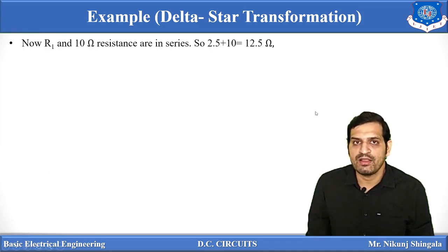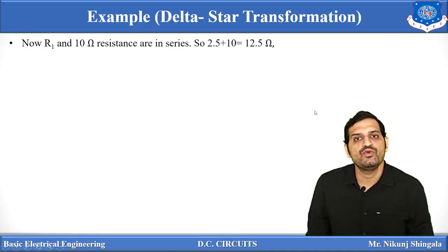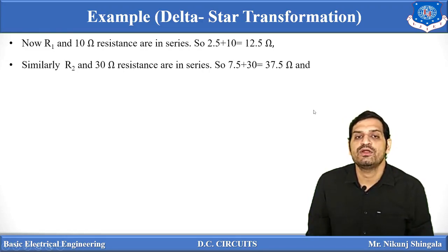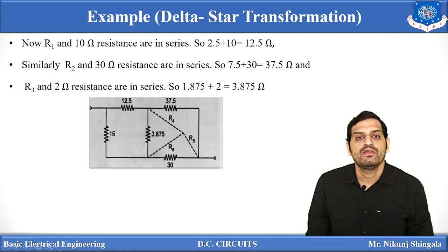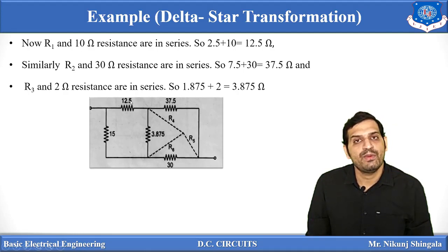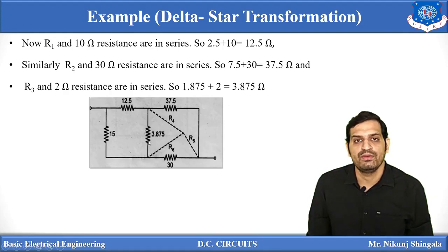After the delta-to-star conversion, the original 5, 15, and 20 ohm resistances are removed. R1 is now in series with 10 Ω → 2.5 + 10 = 12.5 Ω. R2 is in series with 30 Ω → 7.5 + 30 = 37.5 Ω. R3 is in series with 2 Ω → 1.875 + 2 = 3.875 Ω.